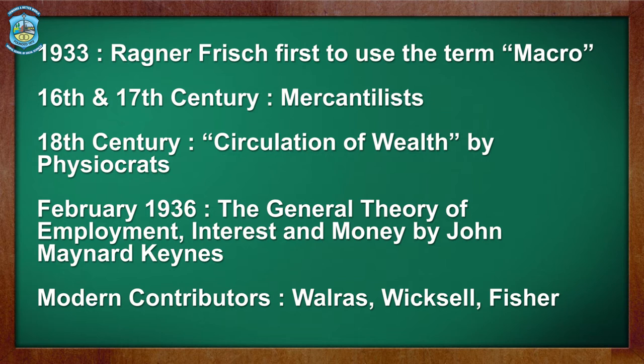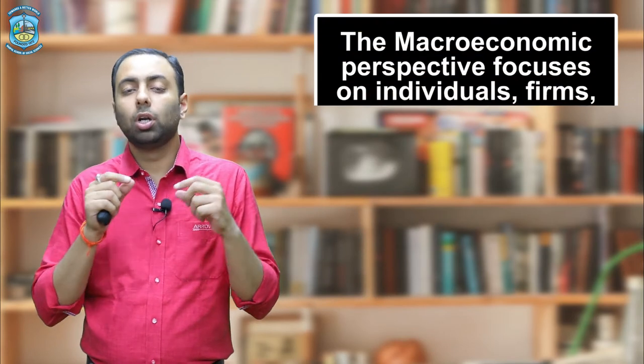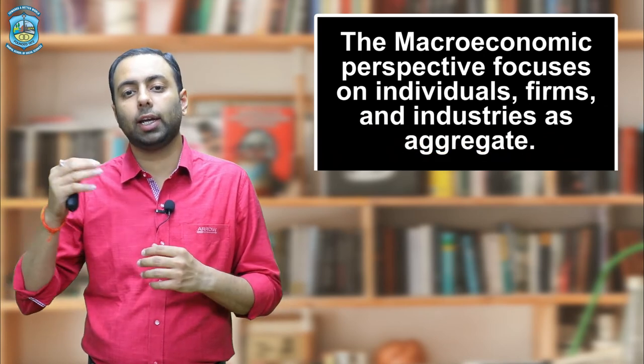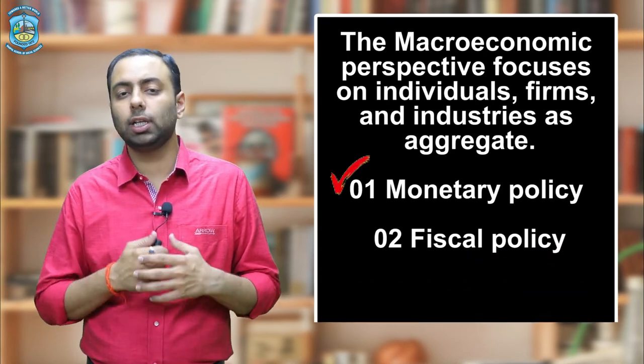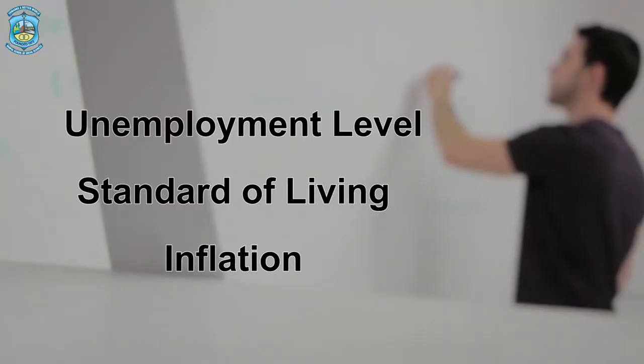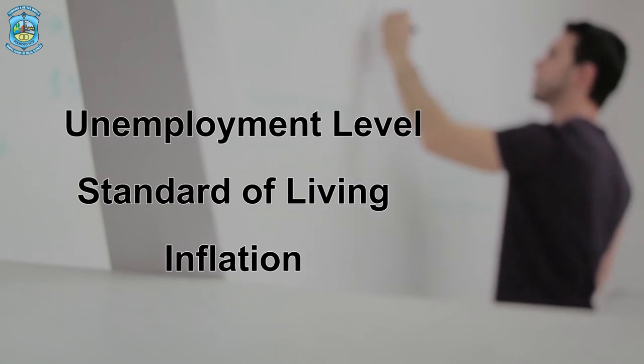A revolutionary change came when John Maynard Keynes, in February 1936, brought his book The General Theory of Employment, Interest and Money, whereby the old microeconomic variables were not able to answer the economic problems. Keynes developed a general theory of income, output, and employment in the wake of the Great Depression. The concept of macroeconomics talks about the economy as a whole, and the goal is to understand the economy — not from the perspective of an individual, but as an aggregate. Macroeconomics has two types of policies: monetary policy and fiscal policy, which address unemployment, standard of living, inflation, and various price levels.